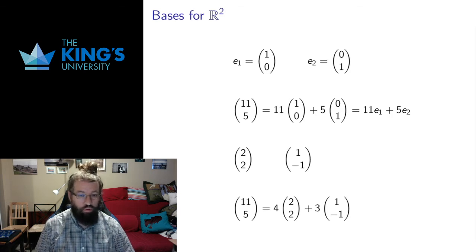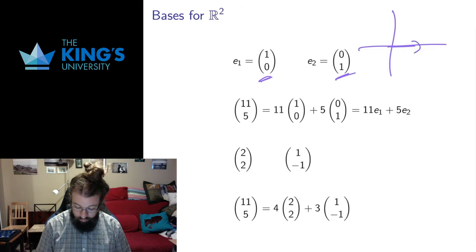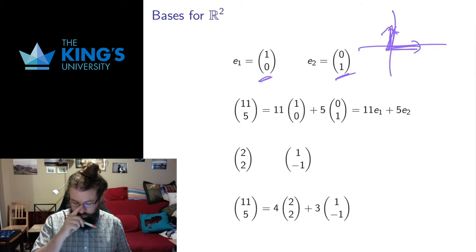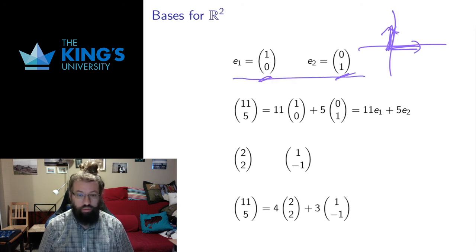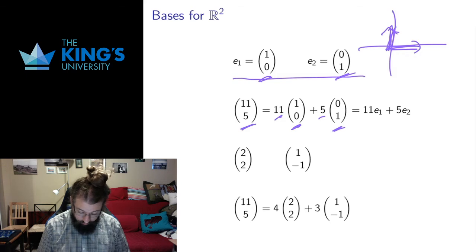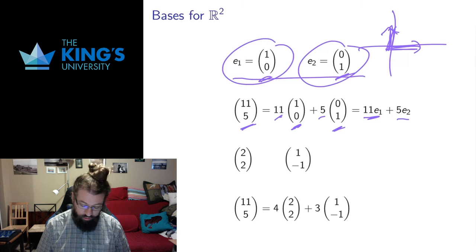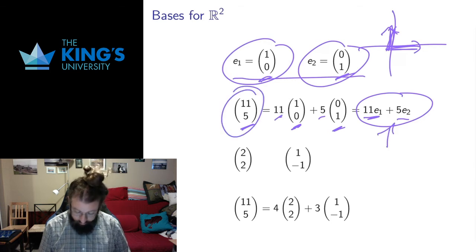There are standard bases for Euclidean space. The standard basis for R2 is the unit vector in the x direction and the unit vector in the y direction — each of length 1. Between those two vectors we can get anywhere: any multiple along the x-axis and any multiple along the y-axis gets us to any place in the plane. Any vector can be written as a linear combination of the basis. For example, the vector (11, 5) is 11 times the x-direction vector plus 5 times the y-direction vector — written as 11·E1 + 5·E2.